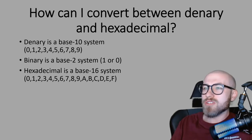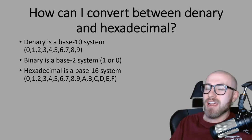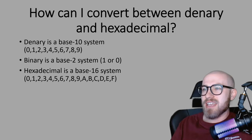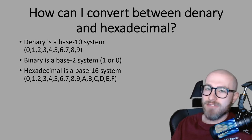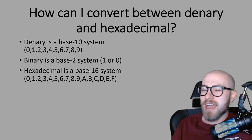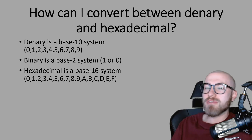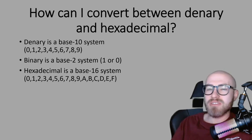In hexadecimal we go from 0, 1, 2, 3, 4, 5, 6, 7, 8, 9 — but then above 9, so 10 would be A, then B, C, D, E, and F. It doesn't go any higher than F, and F is the equivalent of 15. We're going to talk about that in a little bit more detail.